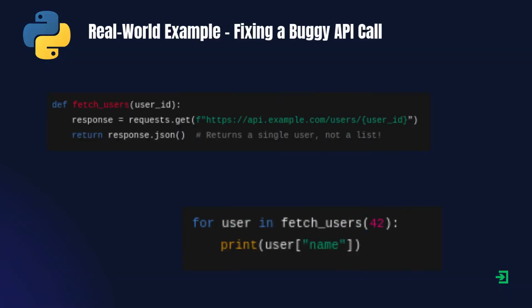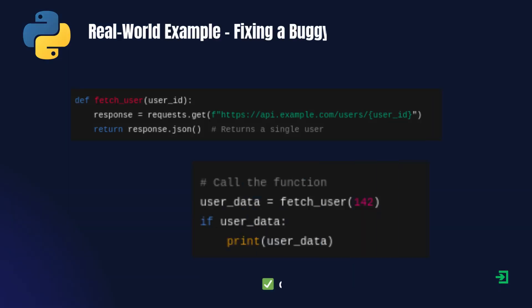Here's a real-world example of fixing a buggy API call. A developer is working with a web API that provides user data. They initially write a fetchUsers function and try calling it and looping over the result. The function name suggests it returns multiple users, but the API actually returns just one user. This mismatch leads to errors when looping over the result. So the developer renames the function correctly to fetchUser. Now the function name correctly represents what it does.